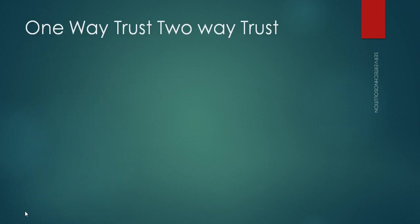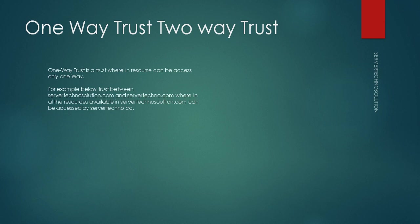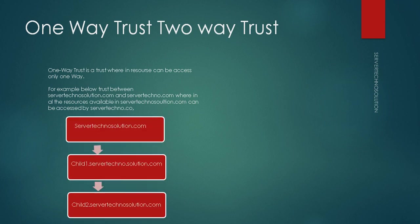Let's discuss each trust one by one. One-way trust is a trust where resources can be accessed only one way. For example, we have a tree with servertechnosolution.com as the parent and child1.servertechnosolution.com and child2.servertechnosolution.com as children. Within this tree, they can access each other's resources.